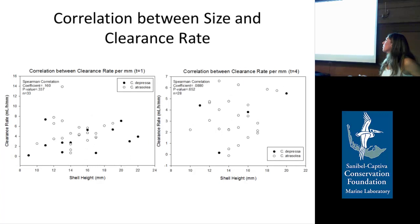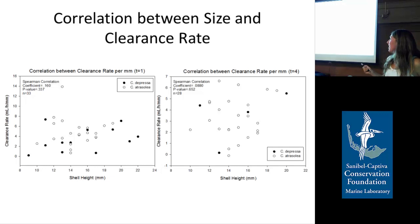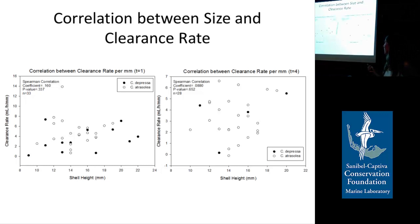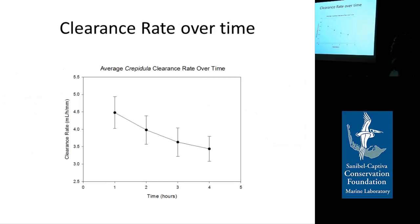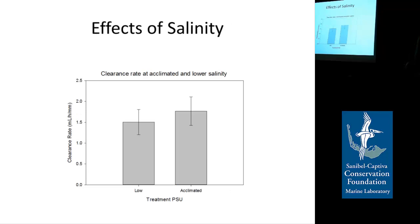When you divide clearance rate by shell height, there was no further correlation — meaning there was a linear relationship between shell height and clearance rate. I also found that generally over time their clearance rate decreased: at one hour their clearance rate was higher than after four hours, probably because they weren't as hungry after four hours or because the cell density had decreased and their filtration rates can be dependent on cell density. That's something that could be further investigated.